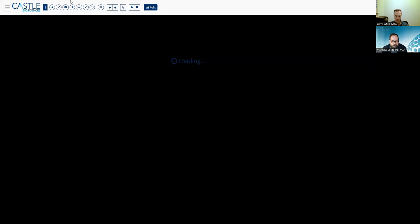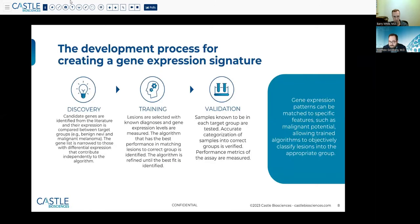So this is an overview of how a test like this is developed. In gene expression profile test development, you start with the discovery effort. You look at benign nevi and malignant melanomas to see if you can identify genes that are differentially expressed. You have a training set where you have lesions with known outcomes. You lock an algorithm with biologically relevant genes, in this case 23 genes.